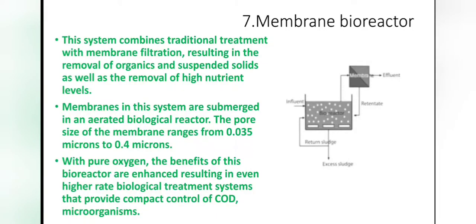The membrane bioreactor combines traditional treatment with membrane filtration, resulting in removal of organics, suspended solids, and high nutrient levels. Membranes are submerged in an aerated biological reactor and the pore size ranges from 0.035 microns to 0.4 microns. With pure oxygen, the benefits are more enhanced. Advantages include reduced loss of enzyme, and enzyme lost by denaturation can be made up by periodic addition of enzyme. Substrates or enzymes can also be easily replaced.